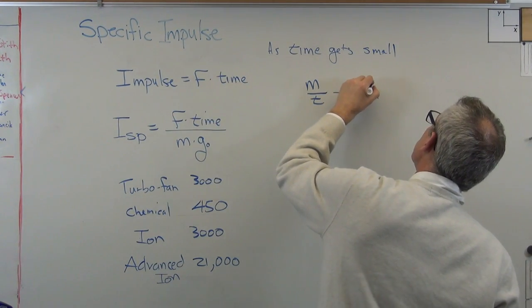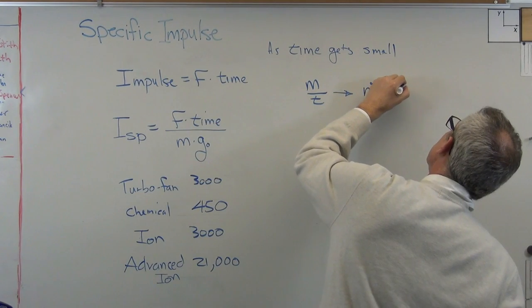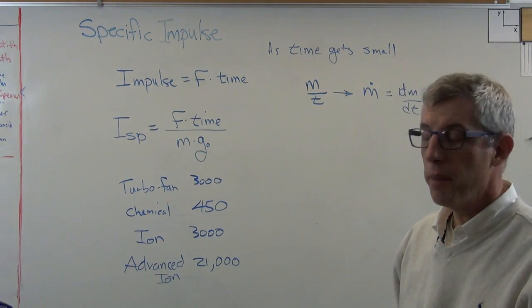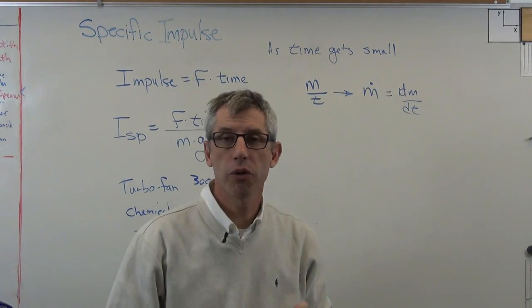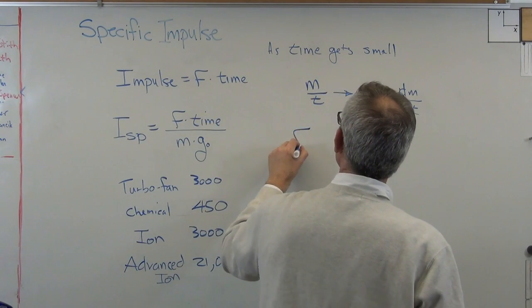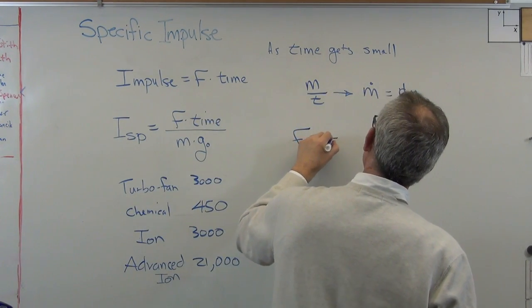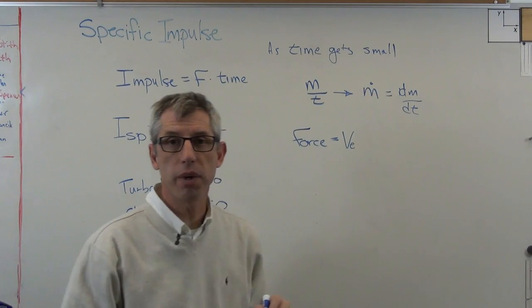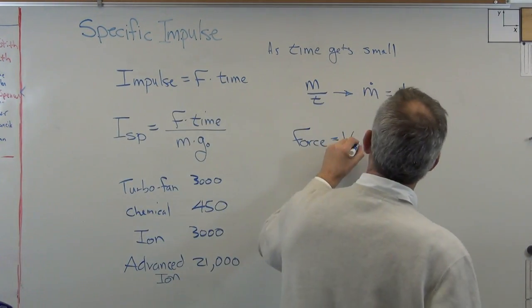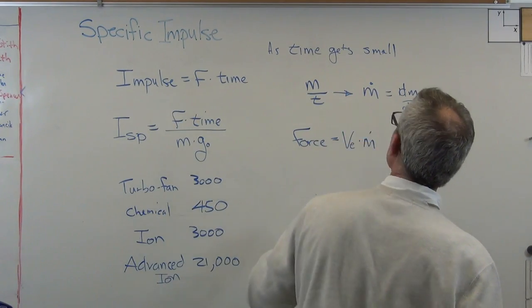...this is the mass consumed and the time over which it's consumed, starts looking like m dot. And that's dm dt, if you want to write it in that form. There's one more thing you need to know. The force produced by a jet engine or a rocket engine is the velocity of the exhaust, v sub e, so that's how fast the exhaust is moving with respect to the engine, times m dot.